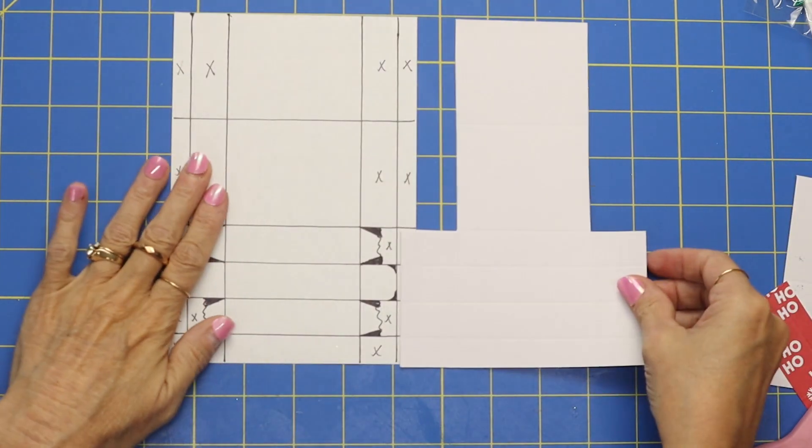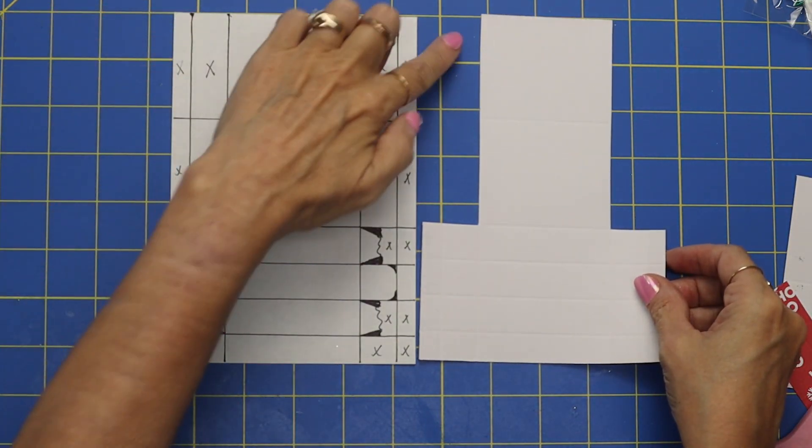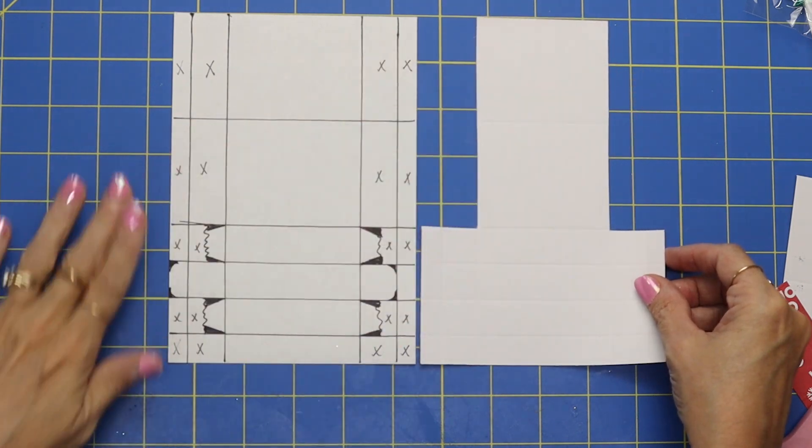Okay, so can you see what we have? We've cut out those four squares right here and then those four squares.